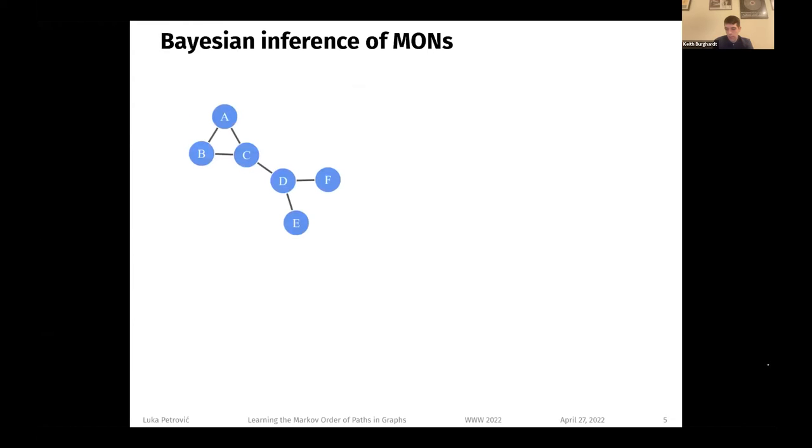So the first question is how can we infer multi-order network models and include the topological constraints in the inference? To answer this question, we applied Bayesian learning. In Bayesian learning, we do not model the parameters as point estimates. We keep track of whole distributions of the parameters. In this case, the parameters are transition probabilities. We encode the topological information in the prior distribution of the parameters.